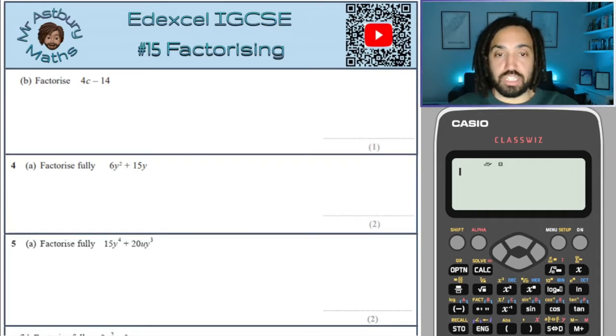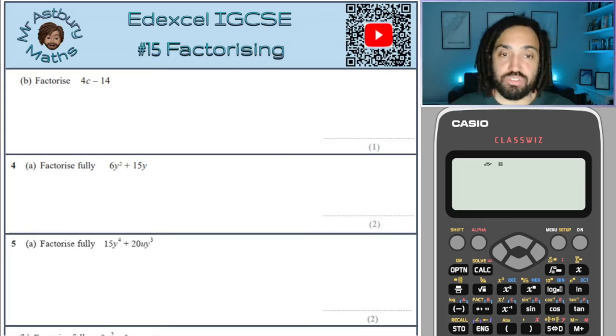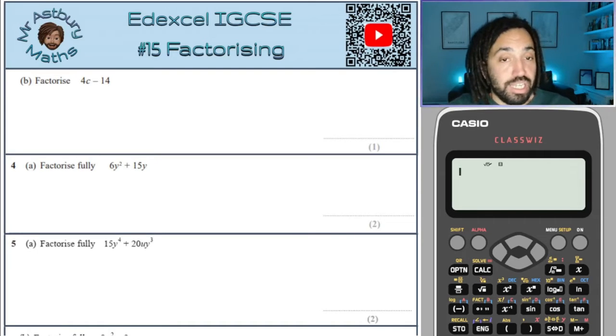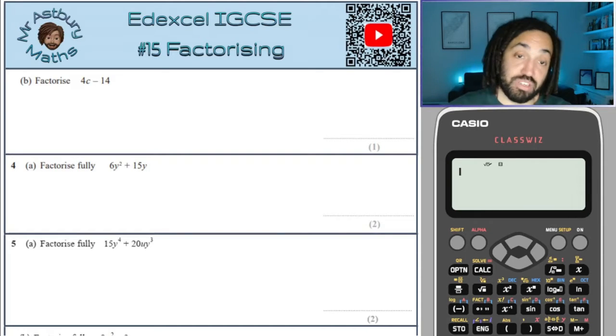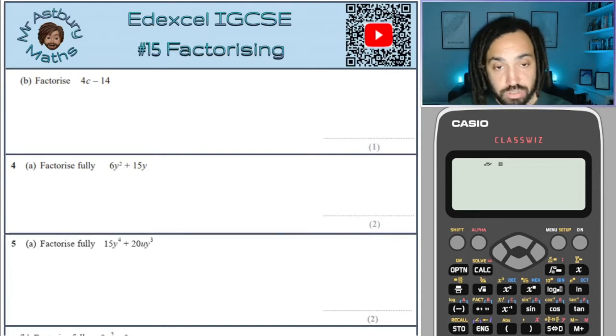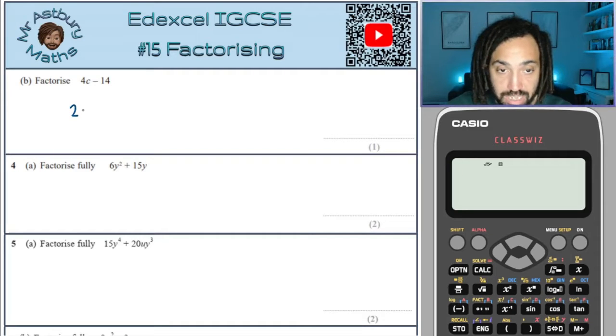So to factorize we've got to find the highest common factor, whether that be numerical or algebraic. In this case I can see that both of these two terms can be divided by two. So two is the highest common factor, so I take a two outside the bracket.